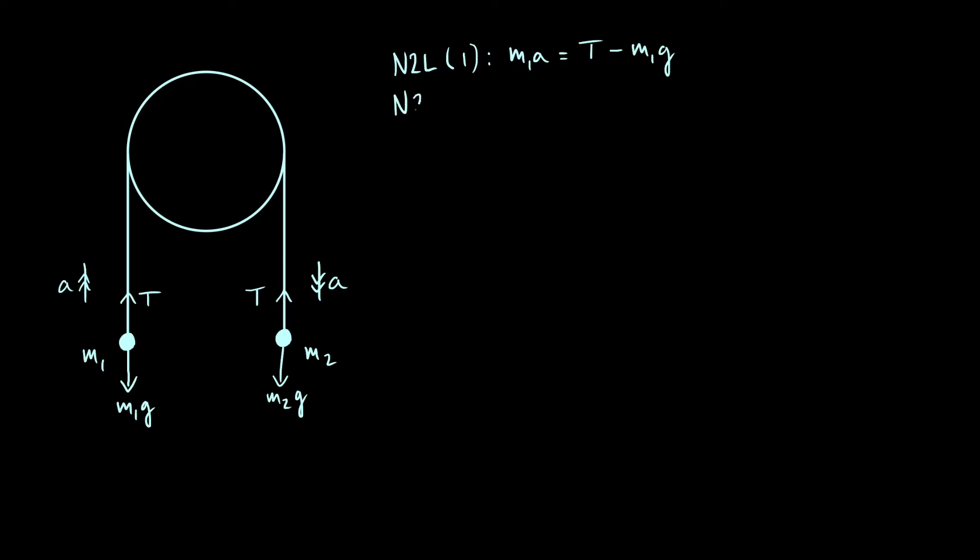So we can do exactly the same thing for the second particle, the second mass. So mass times acceleration, this time it's just M2A. We have to be a bit careful because it's accelerating in the opposite direction. So this time, the force that is causing it to accelerate, that is driving that acceleration, is actually the weight, because it's accelerating downwards. So the weight is the thing which is causing that downwards motion. So M2G, and this time the tension T is acting against that motion. So we get a minus sign in front of the T.